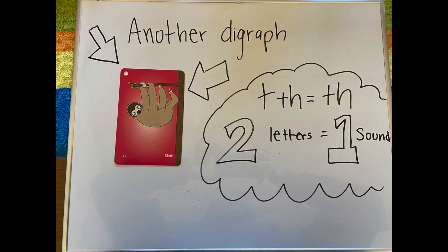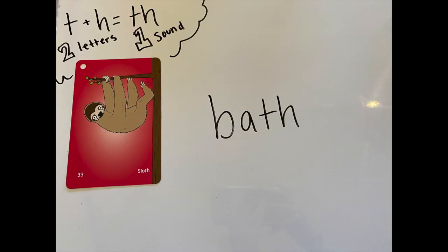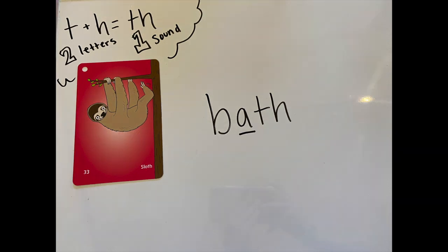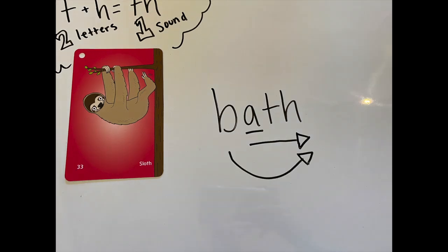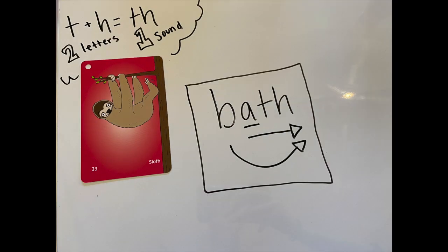That is the new digraph that we are working with today. I'm looking at my word here — I see a middle vowel. That middle vowel is A. A makes the short A sound. Here we go: A, slide right — A, TH. Add the beginning sound: BATH. My word is bath.